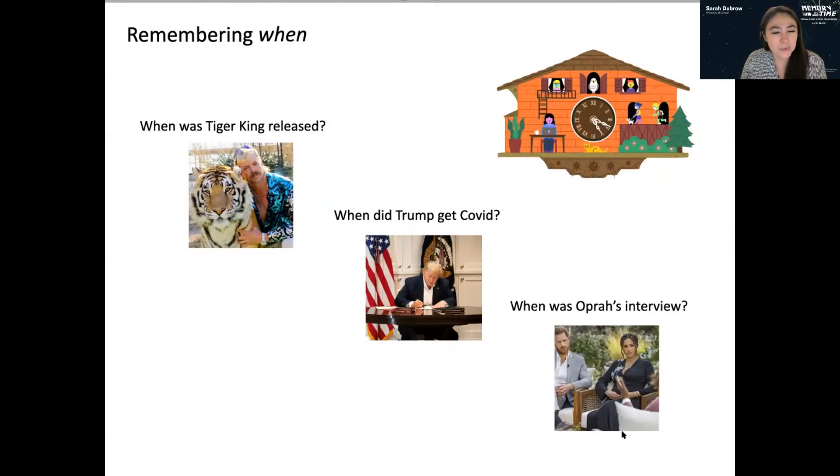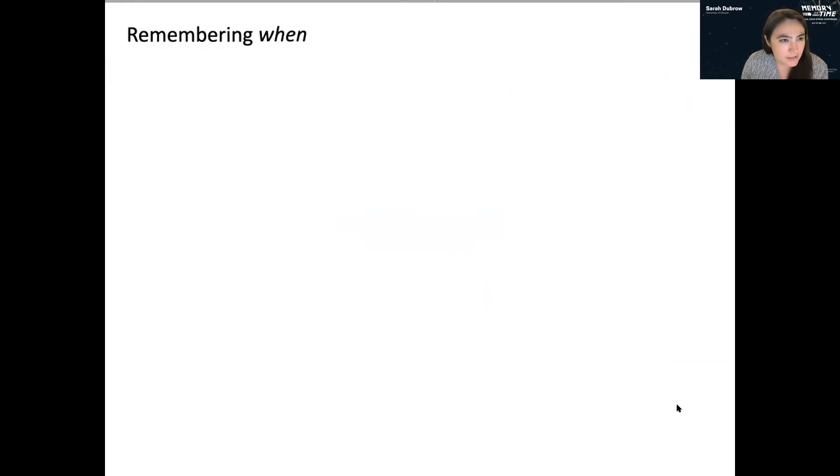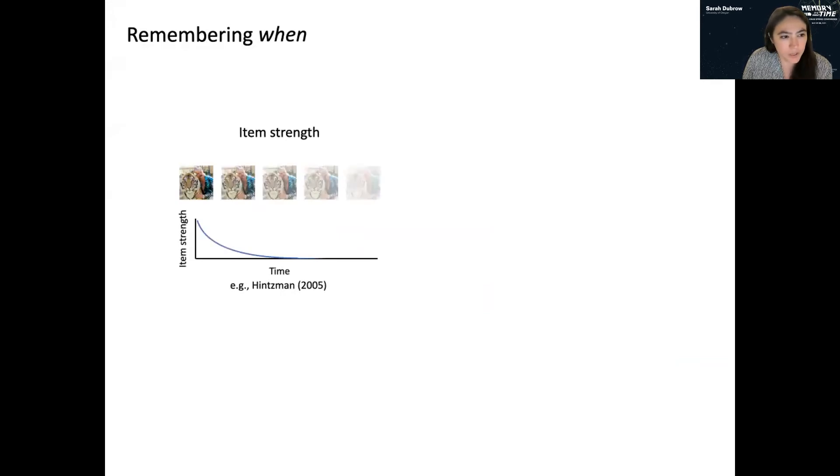So the question that I hope to address here is how we actually retrieve that kind of information. And there are at least two broad classes of theories about what sort of information we use to make these temporal judgments. On the one hand, you can infer temporal information from simple item strength, so the strength of a memory trace.